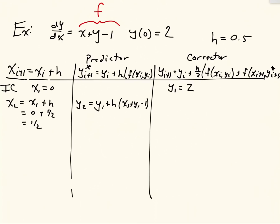And if we plug numbers into that, this is equal to y_1, which is 2, our step size is 1/2, x_1 is 0, y_1 is 2, and minus 1 is our end of the equation. If we do the math out of that, we get 2.5.